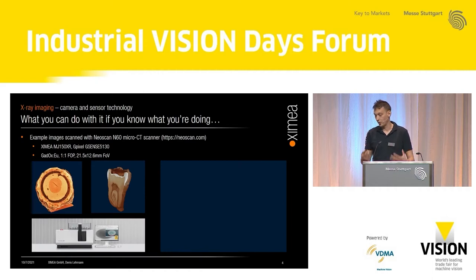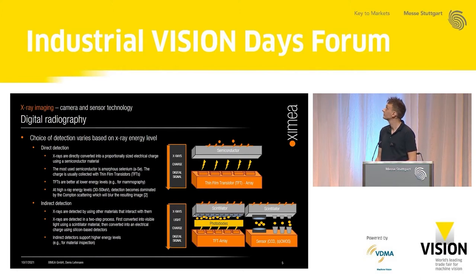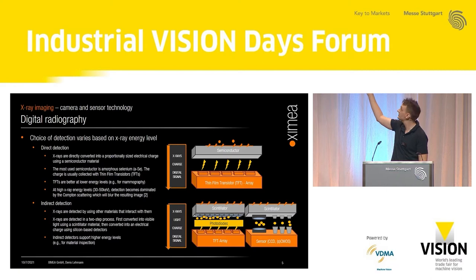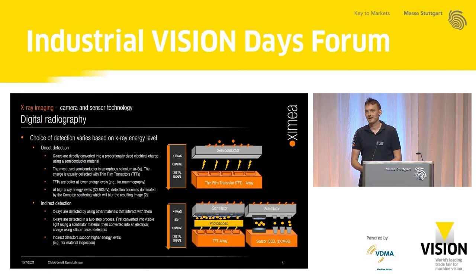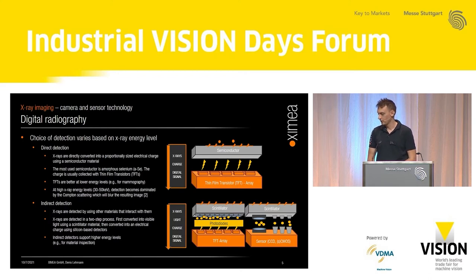Let's have a closer look at how detectors work. In general, there are two types of detection systems. First, there are direct detectors: they receive X-ray radiation and directly transform it into a proportionally sized charge, which is then given to a TFT array that converts it to a digital number. Direct detection is limited regarding energy levels — from my reading of papers, it's limited to around 30 to 50 kilo-electronvolts.